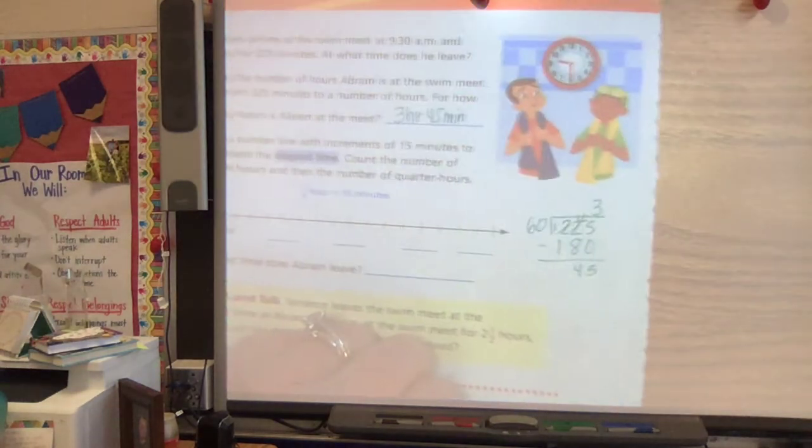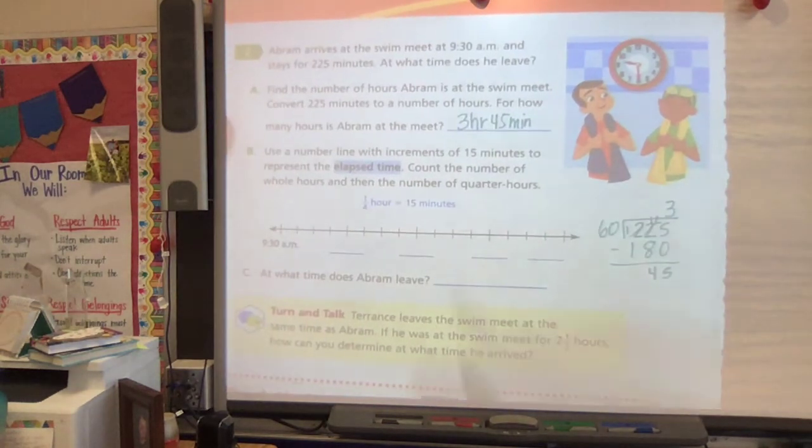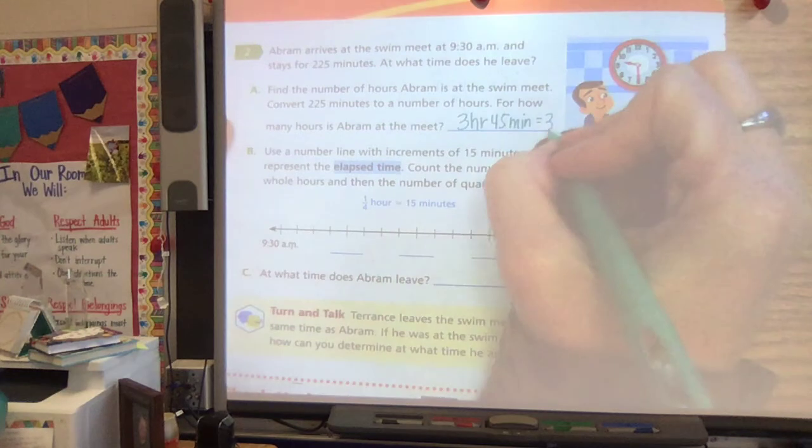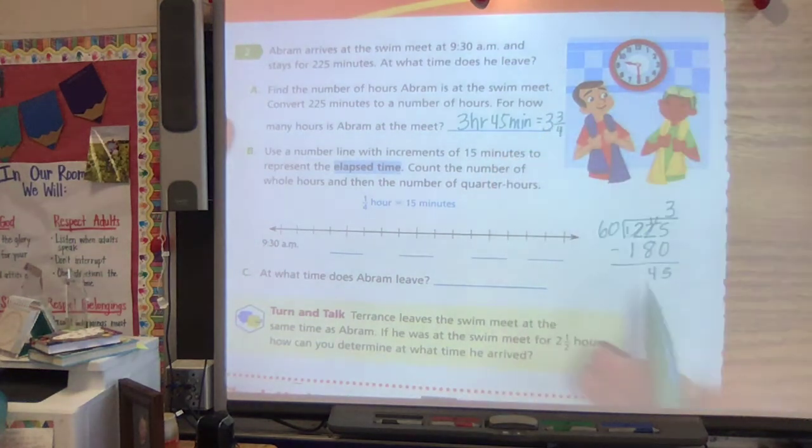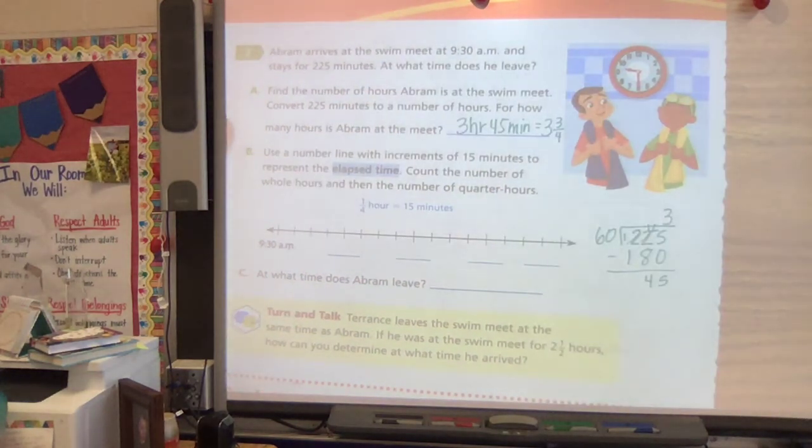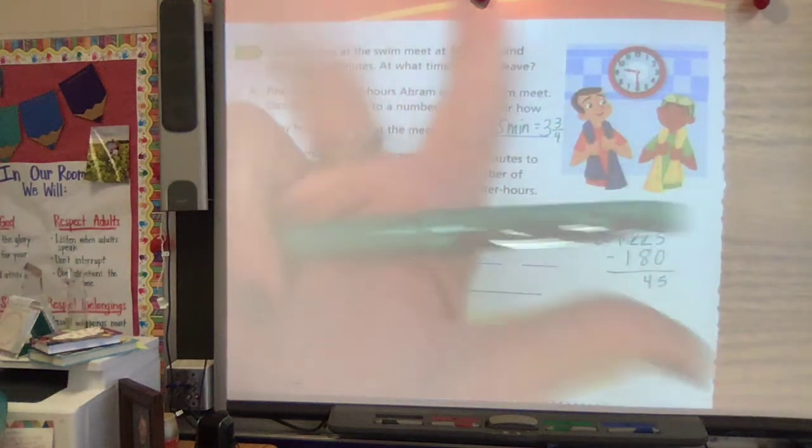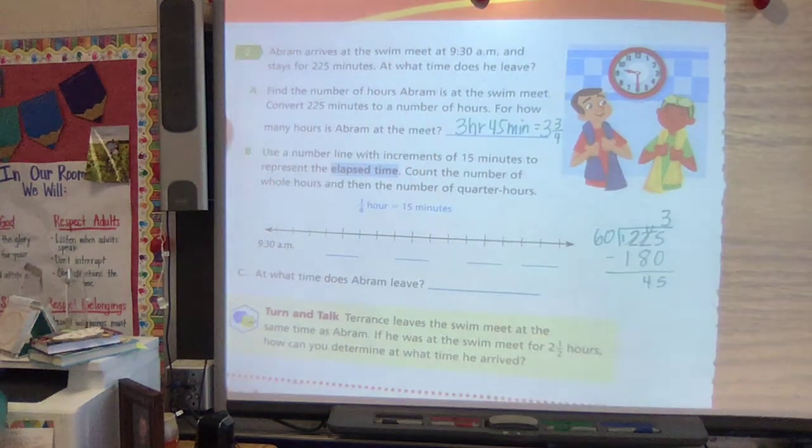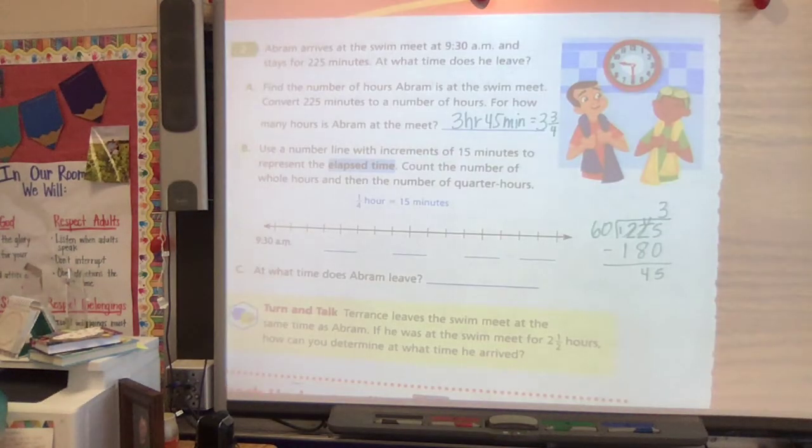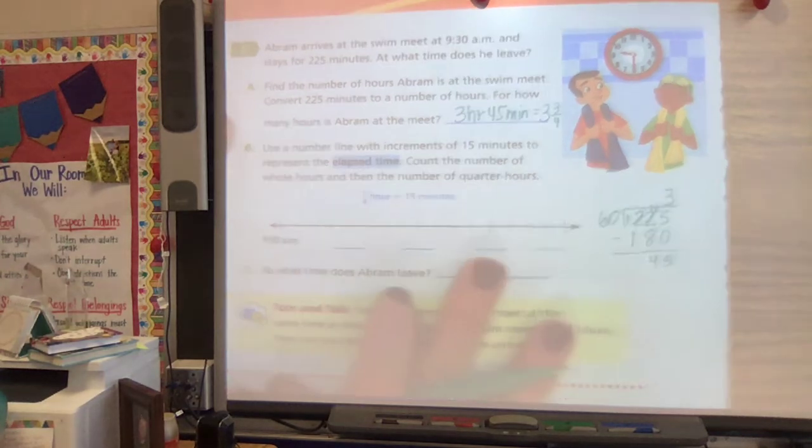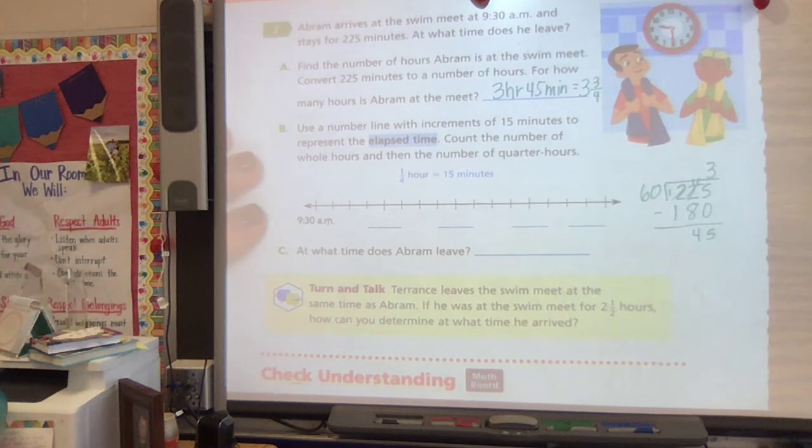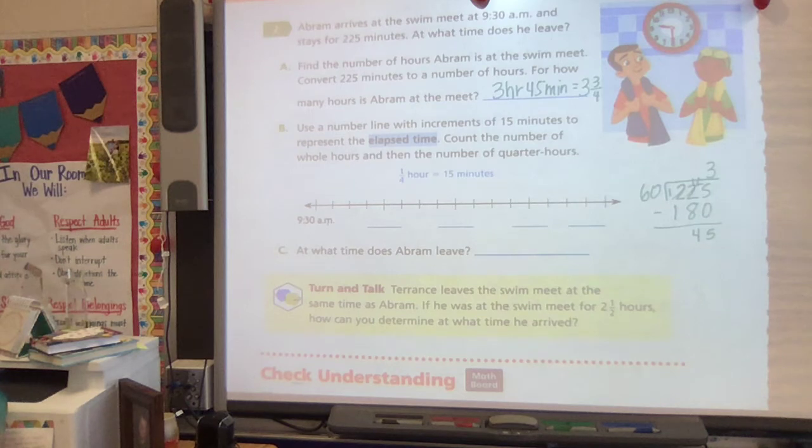And then we could also say that that time is three and three fourths hours, because if an hour is split into four blocks, 15, 30, 45, 60, that's three of those fourths. So then it says, this is a strategy that you might like. You can use a number line with increments of 15 to represent the elapsed time. Count the number of whole hours and then the number of quarter hours.